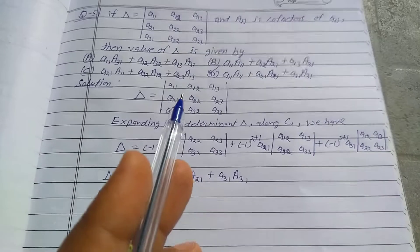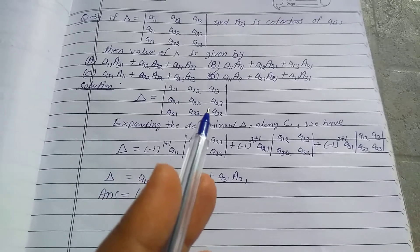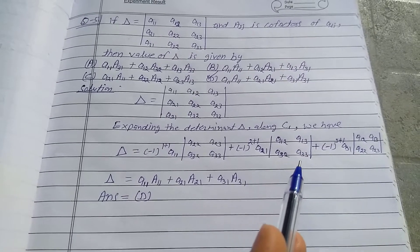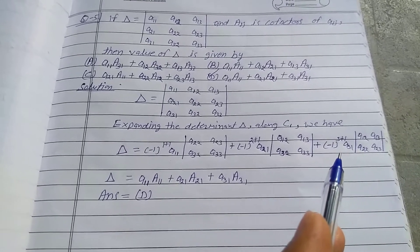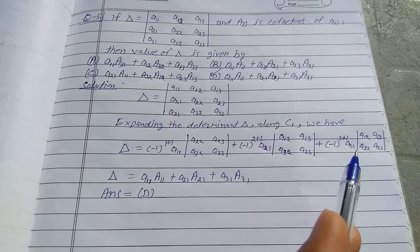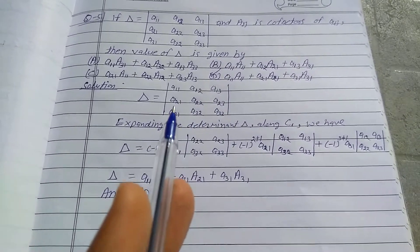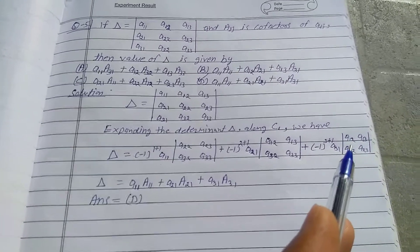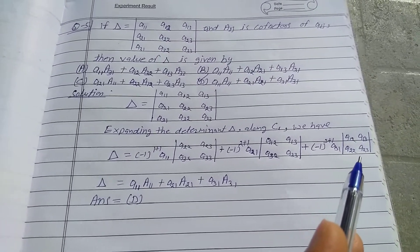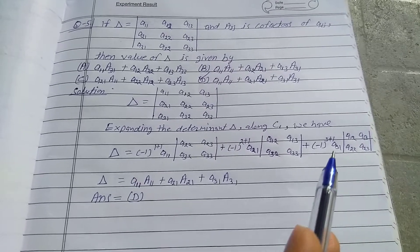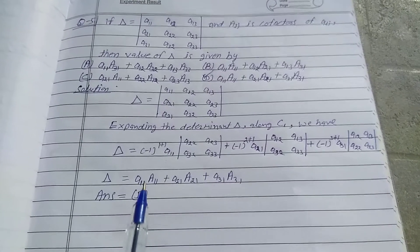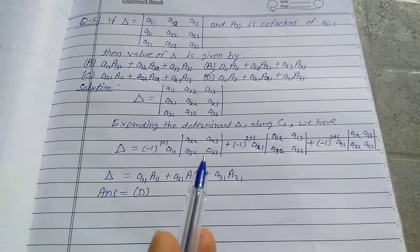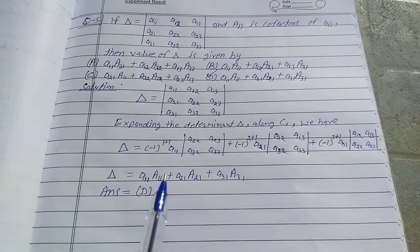Plus (-1)^(3+1) · a31 · determinant of a12, a13, a22, a23. So delta equals small a11 and this sign with this determinant is written as capital A11.